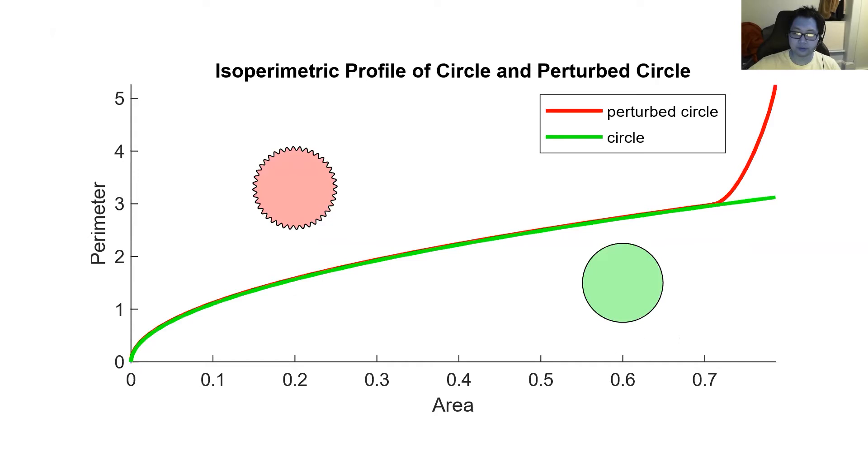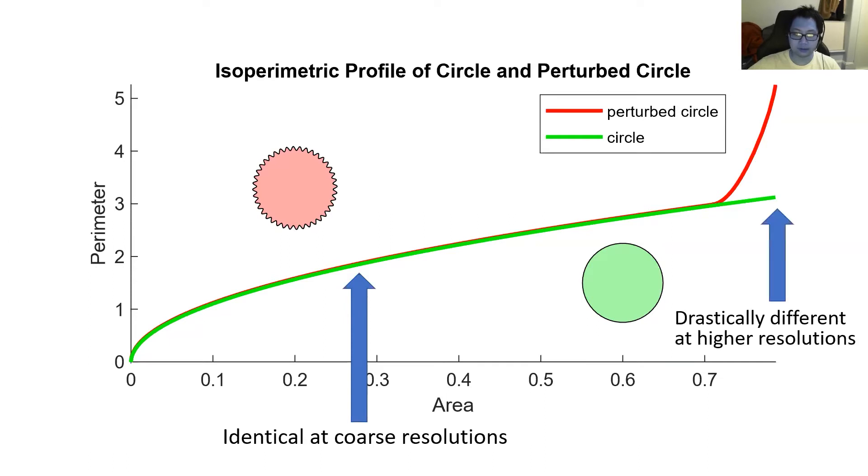The circle and perturbed circles also have no necks, so we can compute their profiles exactly. This example demonstrates the ability of the isoperimetric profile to measure multi-resolution complexity. You can see that at coarse resolutions, both domains are identical, while at higher resolutions, they differ drastically.